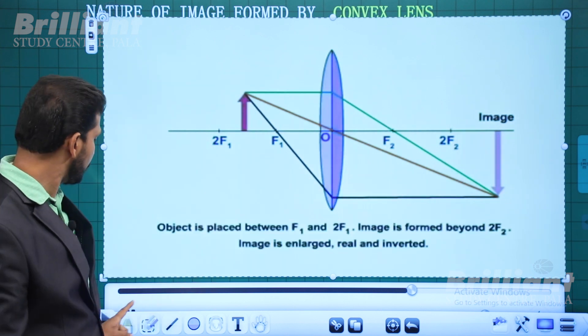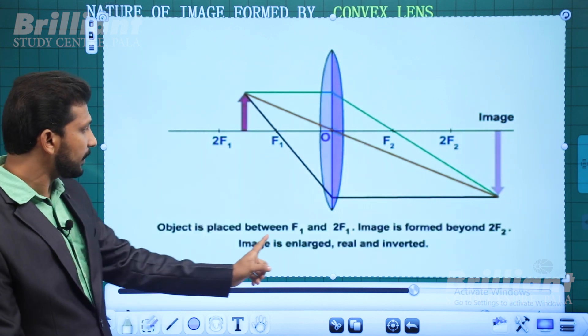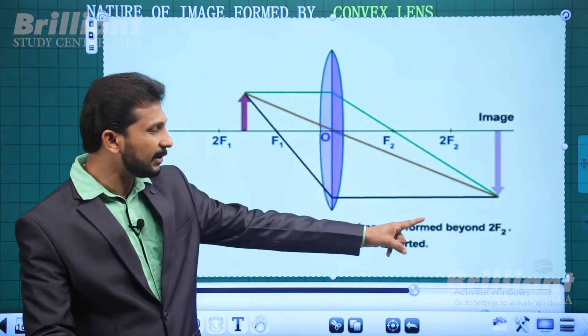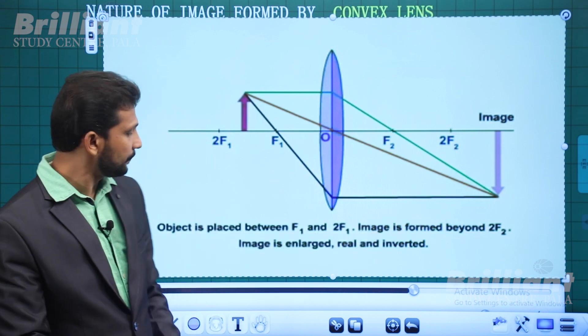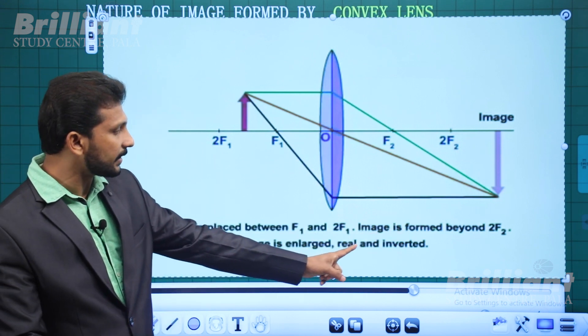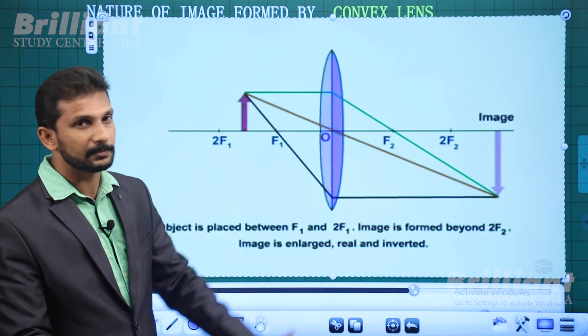When the object is placed between F and 2F, the image is formed beyond 2F1. The image is enlarged, real, and inverted.